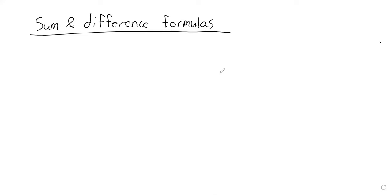You can write formulas for the secant, cosecant, and cotangent, but it's a little different. We'll start with the sine, and specifically with the sine of a sum.